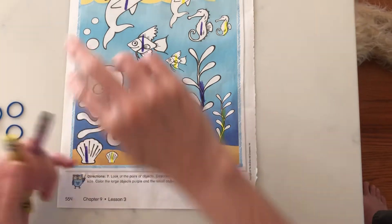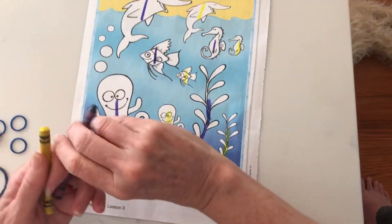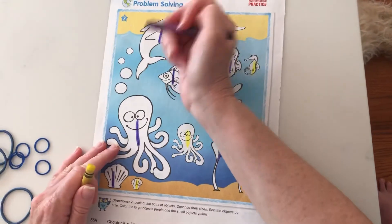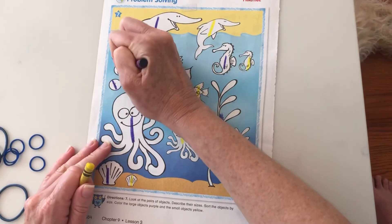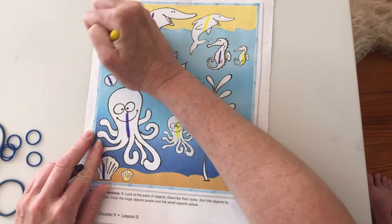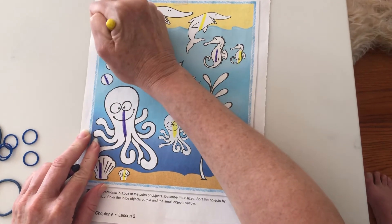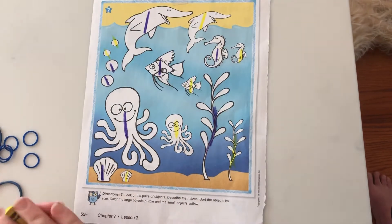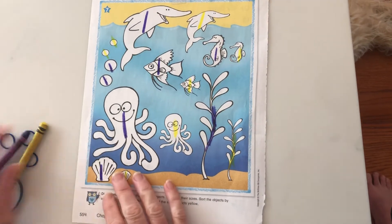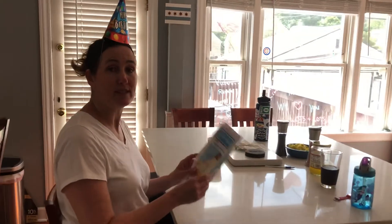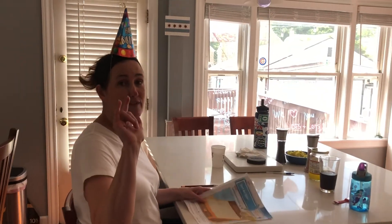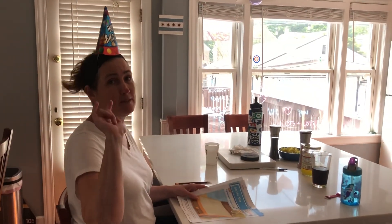We could do these bubbles up here too — these are large and these are small. And that's it! That was easy. Go do your IXL and then go play outside. I love you. I still miss you. Bye!